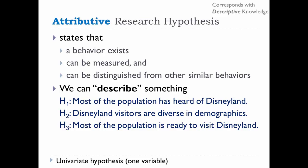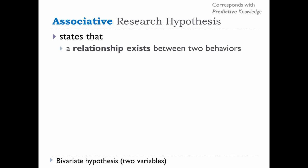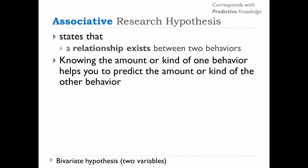To establish relationships between two variables, we would develop an associative research hypothesis. Now we are looking at two variables and the relationship between them. This type of hypothesis states that a relationship exists between two behaviors. The assumption is that once we know about one behavior, we will be able to predict the second behavior, which is why this type of hypothesis corresponds with predictive knowledge.